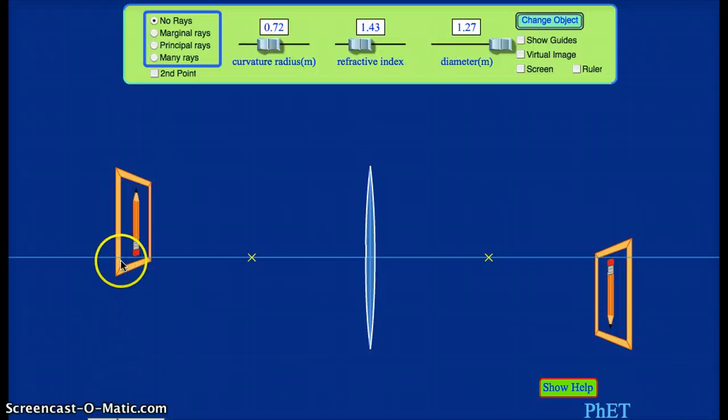So here we are with the simulation again. Here's our object, our lens, and our image. And I want to talk about how to find the location of this image if we had to do this problem on our own.